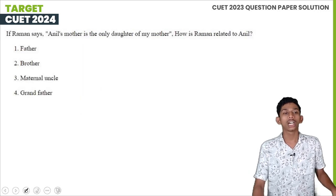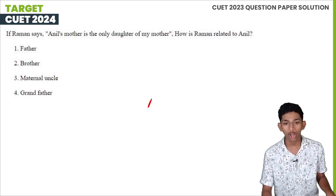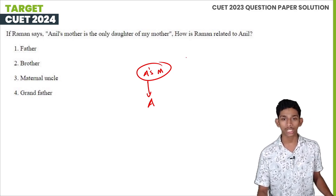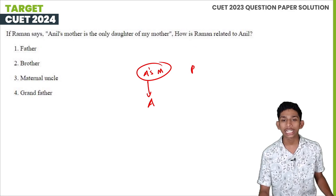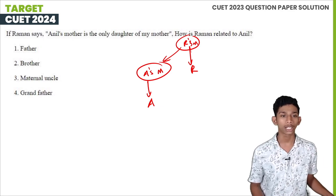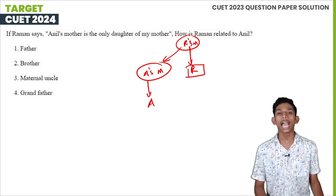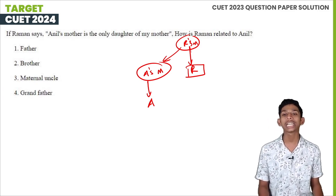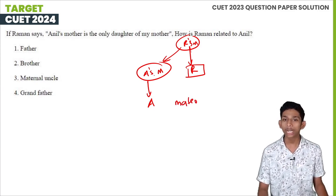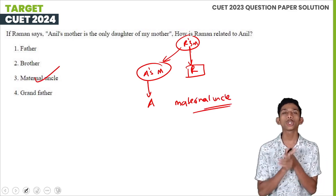Next question: Raman says, 'Anil's mother is the only daughter of my mother.' Anil's mother is the only daughter of Raman's mother. That means Anil's mother and Raman share the same mother. Raman's mother's only daughter is Anil's mother, so Raman is Anil's maternal uncle. How is Raman related to Anil? Raman is Anil's maternal uncle.